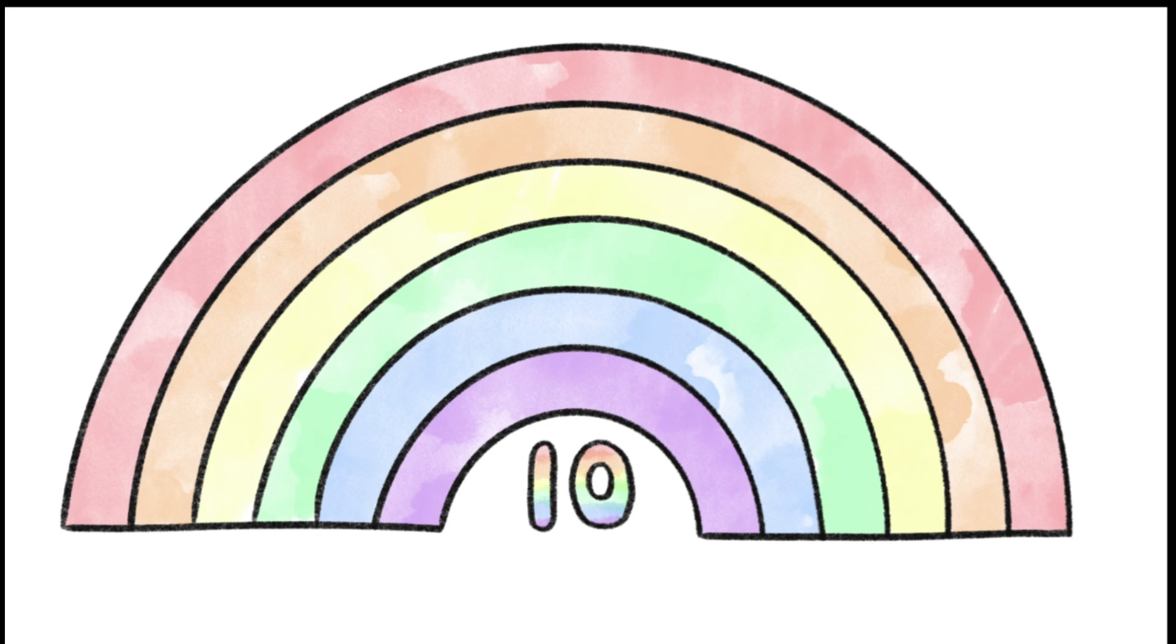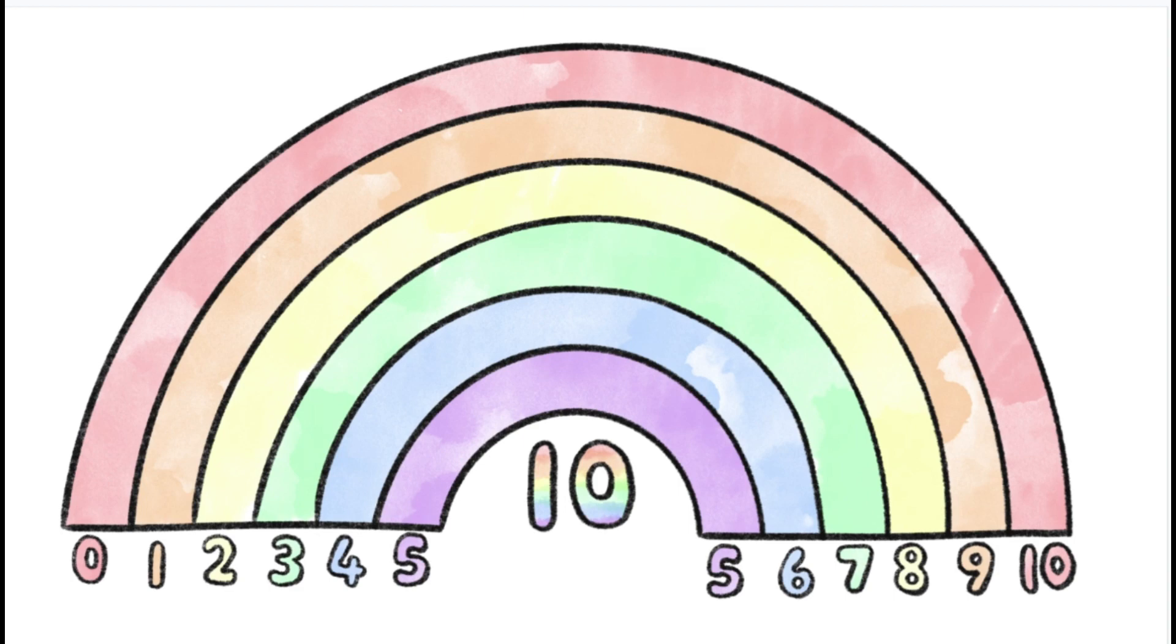Let me introduce you to the rainbow facts. 0 and 10 make 10, 1 and 9 make 10, 2 and 8 make 10, 3 and 7 make 10, 4 and 6 make 10, 5 and 5 make 10. These are our rainbow facts, they always go together.